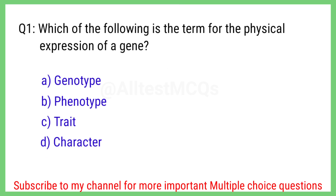Question number 1. Which of the following is the term for the physical expression of a gene? The right answer is option B. Phenotype.